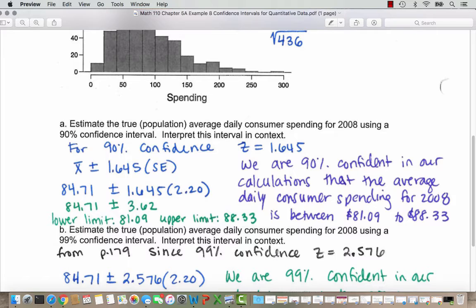We know our sample mean is $84.71, and our standard error is $2.20. So we plug those into our confidence interval formula. When we multiply 1.645 times 2.20, we get $3.62. We're using 1.645 because we want 90% confidence. We know 90% confidence is somewhere between 1 and 2 standard deviations, and it is exactly 1.645 deviations or standard errors in this case.